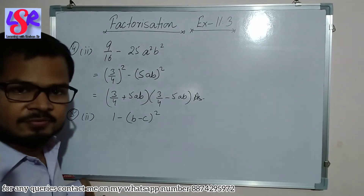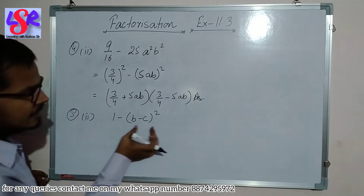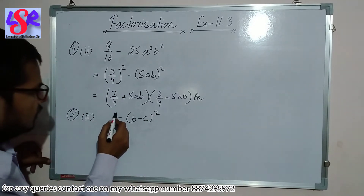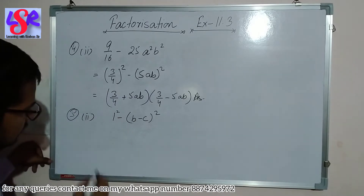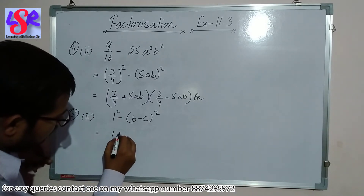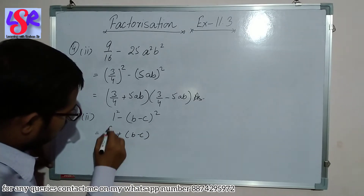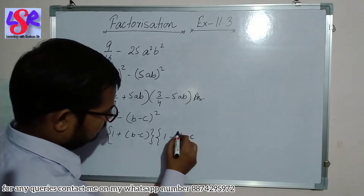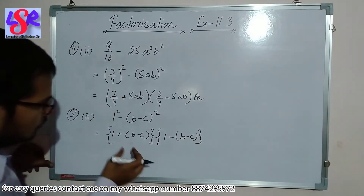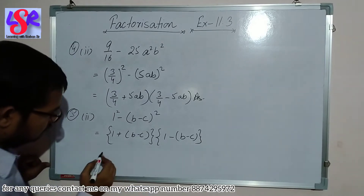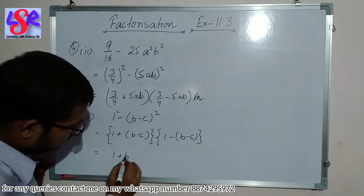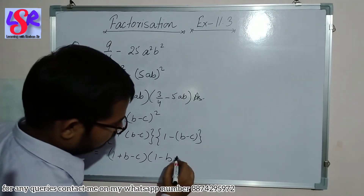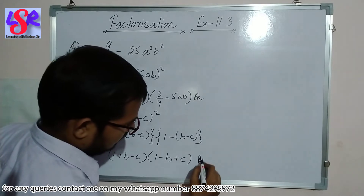Now question 5 second part: 1-(b-c)². Here 1 is the square of itself. Using a²-b²=(a+b)(a-b), this becomes (1+(b-c))(1-(b-c)). Opening the brackets gives (1+b-c)(1-b+c) as the answer.